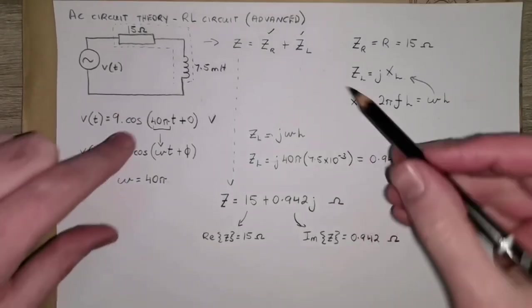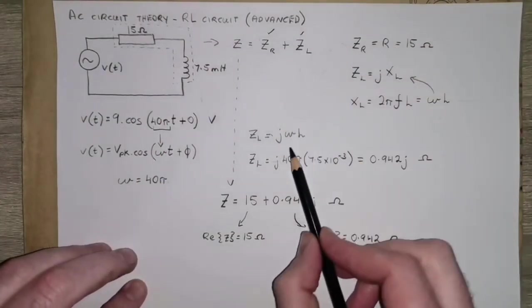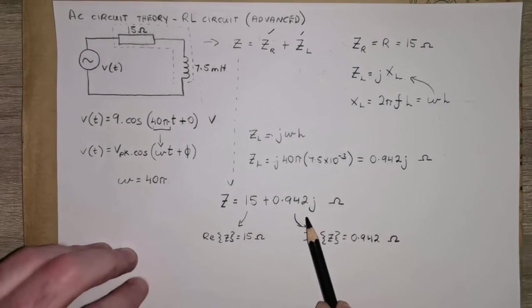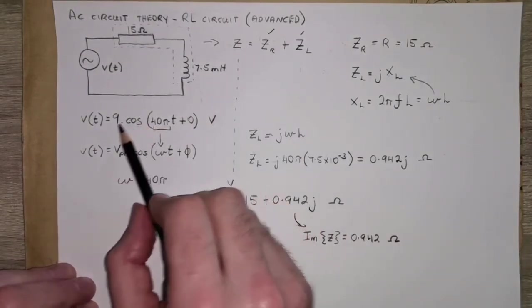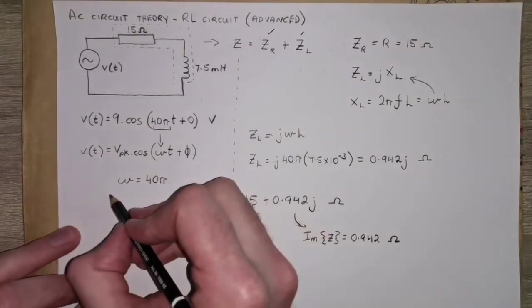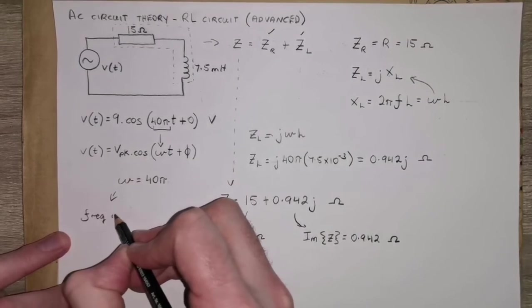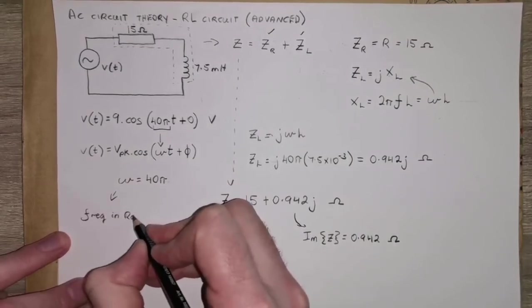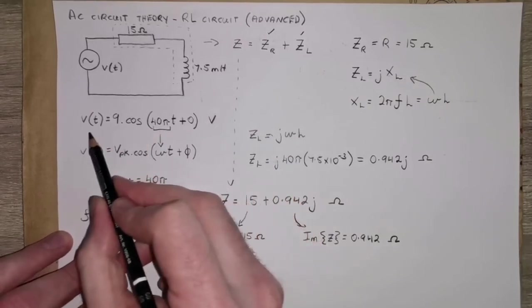So again, we approach it the same way. Get the individual impedances, add them together, get the overall impedance, represented as a Cartesian. The only difference here is how we were given the frequency of our supply. And this time it was given in radians per second, but just in the form of a sine wave formula.